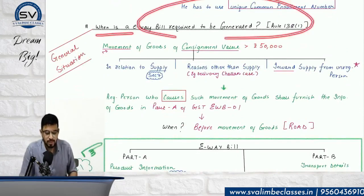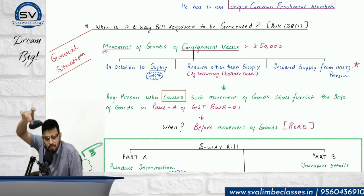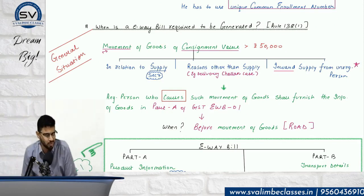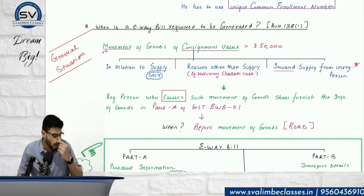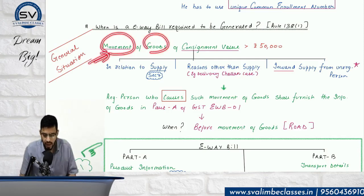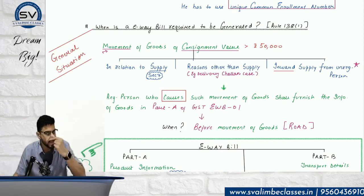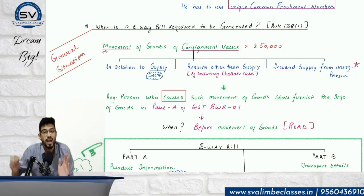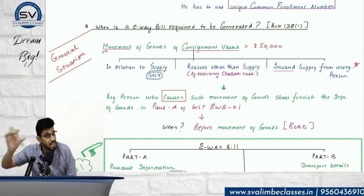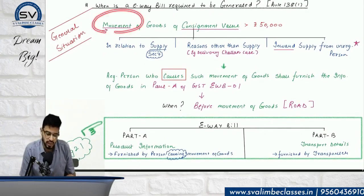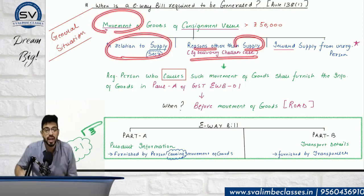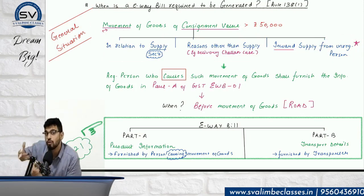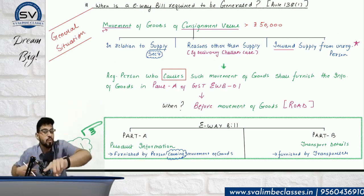E-way bill is not required for every movement. The threshold is ₹50,000. If movement of goods is the trigger, and if goods worth ₹1 lakh are just sitting inside the factory, no e-way bill is needed. The trigger point is movement of goods with consignment value more than ₹50,000. Consignment value means the value of taxable goods plus GST — i.e., total value including tax. Movement can be in respect of supply, or reasons other than supply such as delivery challans, job work, or inward supply from unregistered persons.